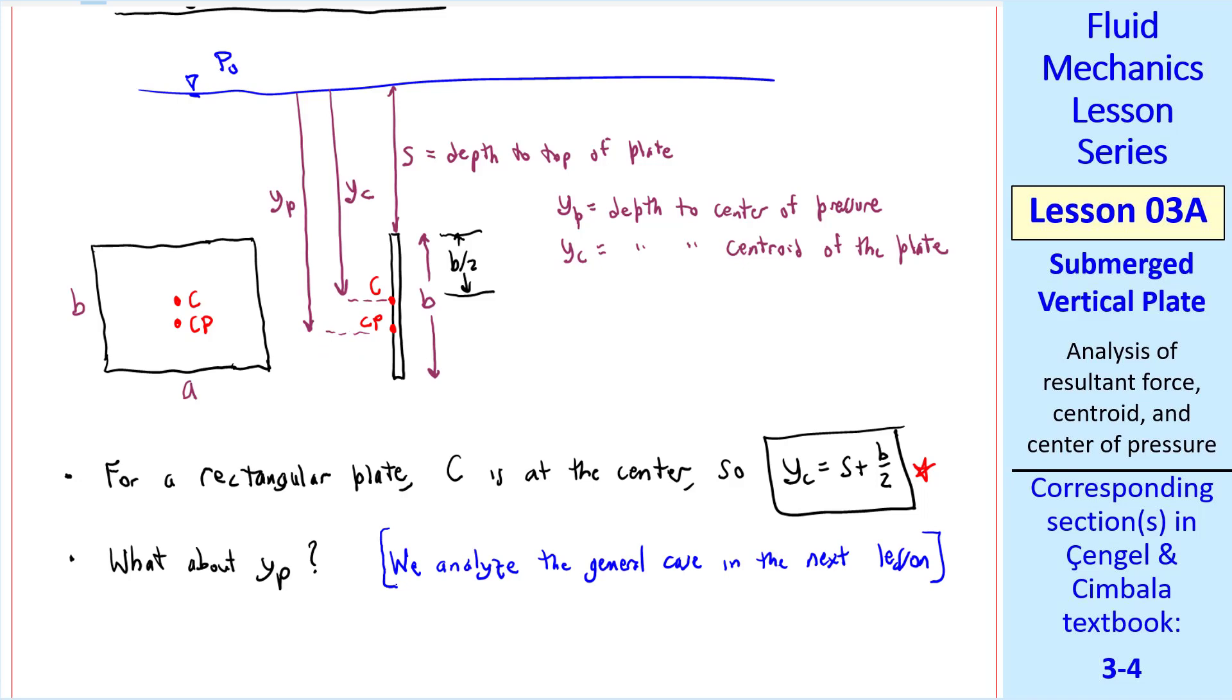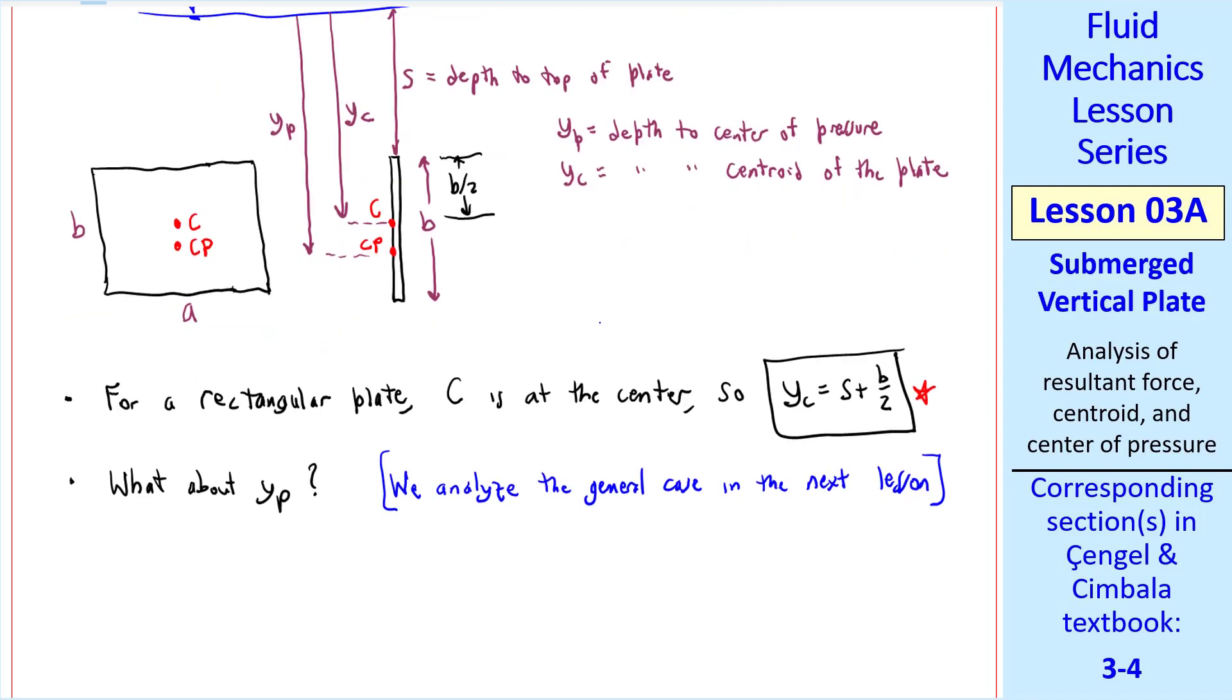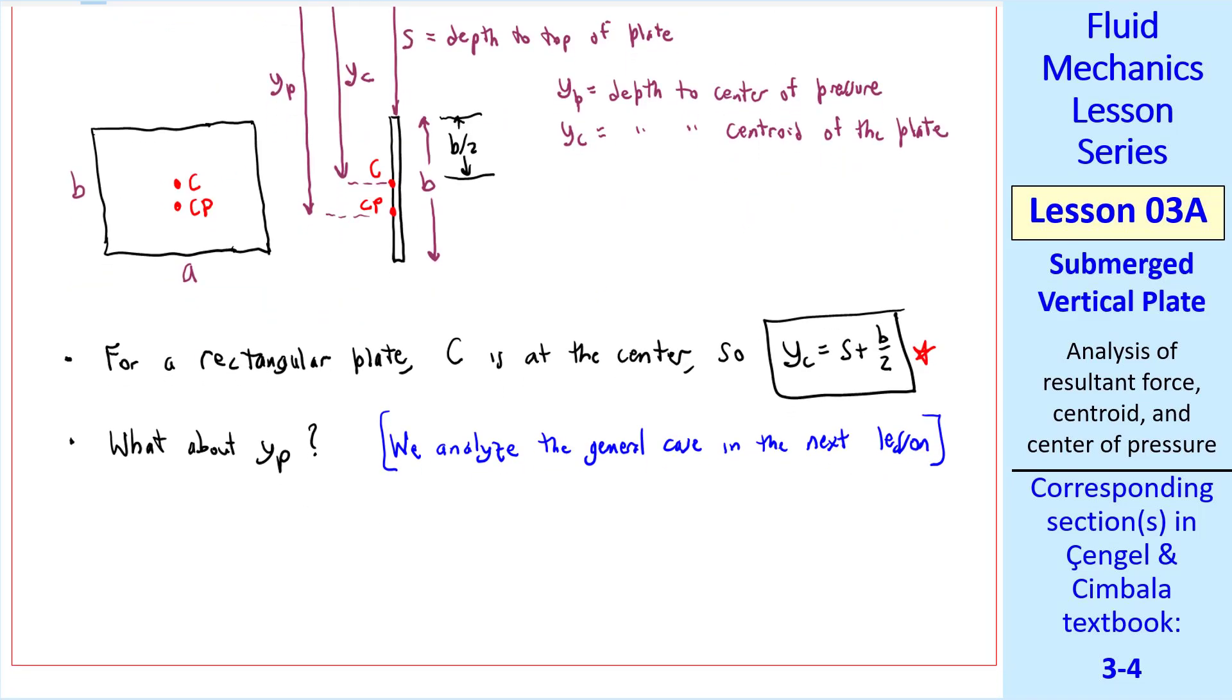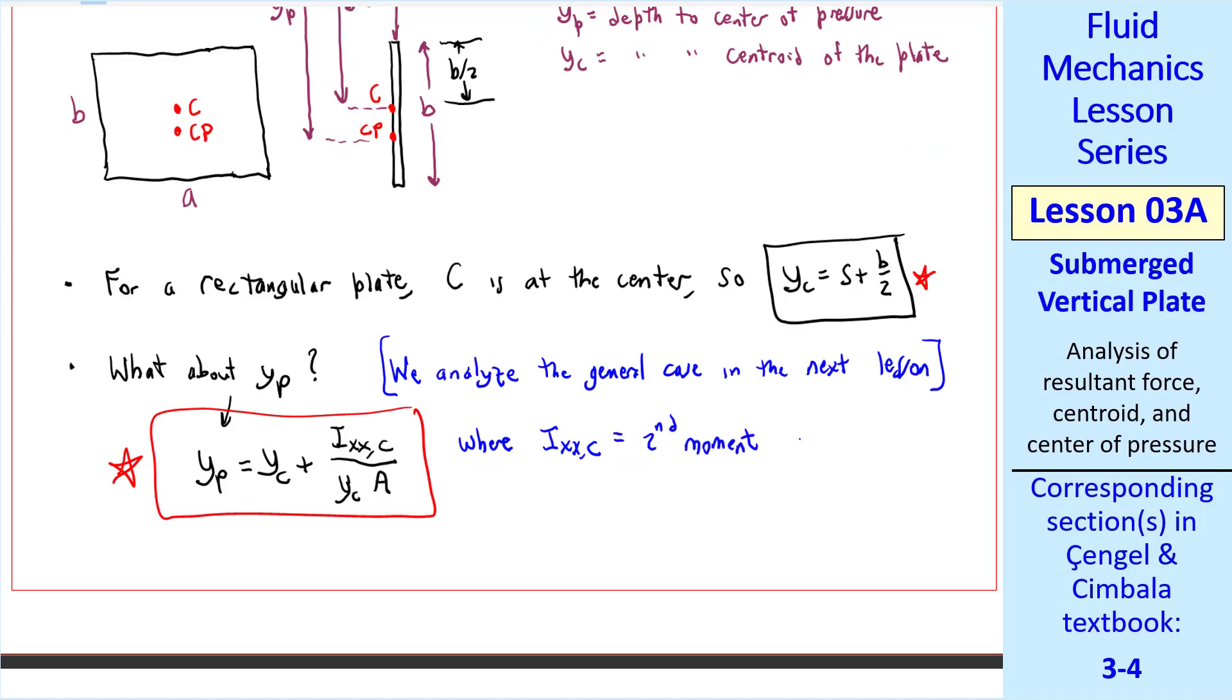We will analyze the general case in the next lesson. I'm just going to give you the result here. YP is YC plus I sub XXC divided by YC times A, where IXXC is the second moment of area about the axis into the page, which here is the X axis, hence the XX notation here. IXXC is also called the centroidal moment of inertia.